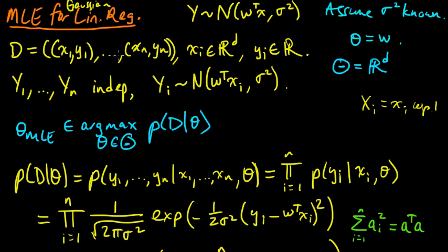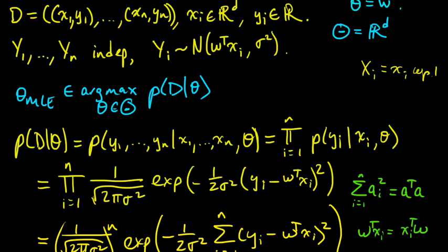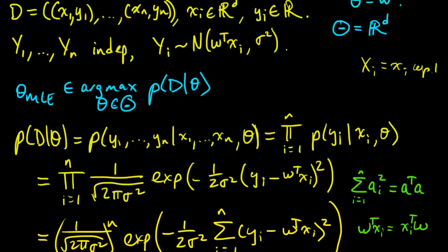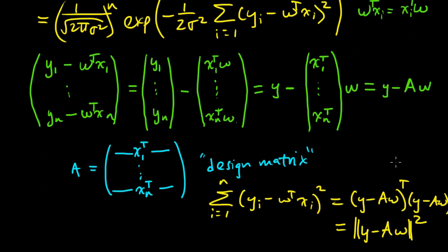We have our data, we assume a probabilistic model, we want to maximize the likelihood function. So we took our likelihood, wrote down an expression for the likelihood function, and simplified it so we got this. Then we simplified this sum by observing that it was equal to just the norm of this thing squared, or the dot product of this vector y minus Aw with itself, where A was this design matrix thing.